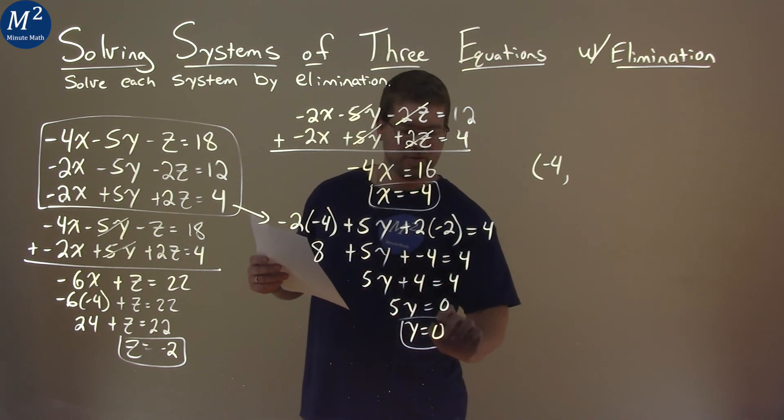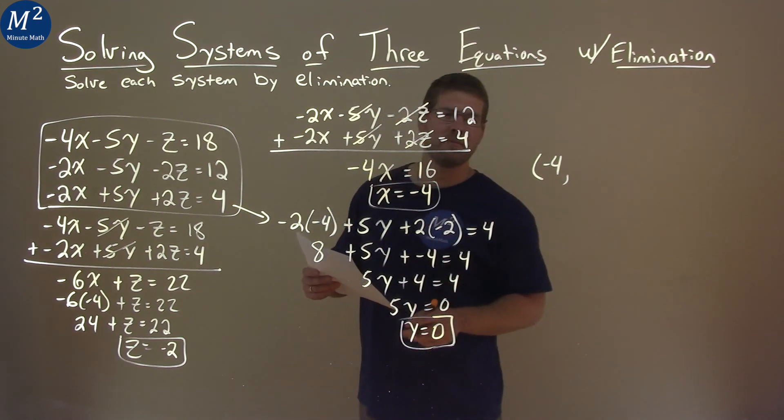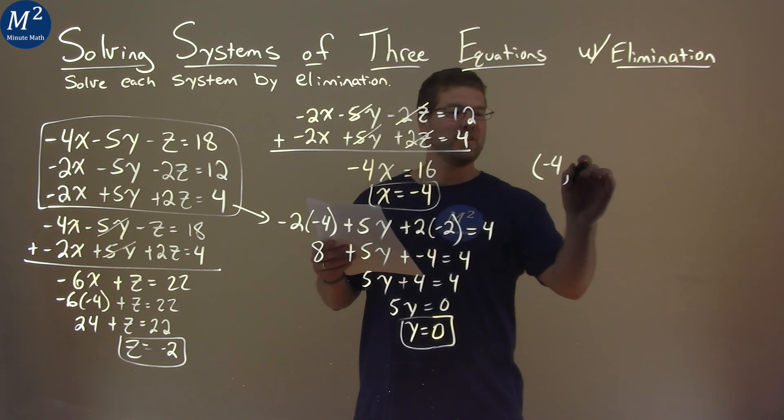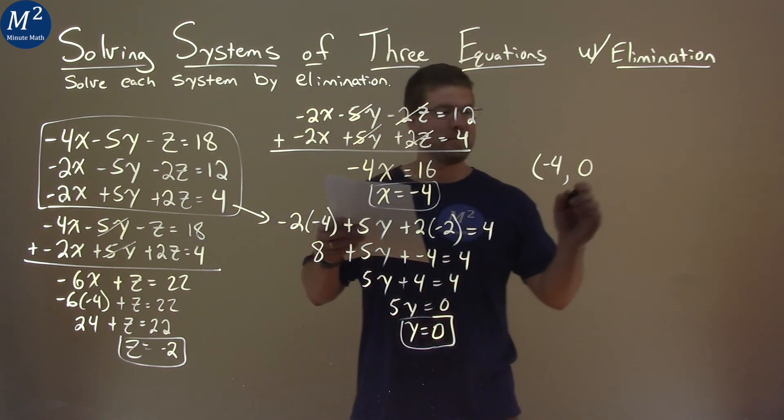But you divide 5 to both sides, that's 0. I almost made a common mistake, so you've got to catch yourself. y is 0 here, and then the z value is negative 2.